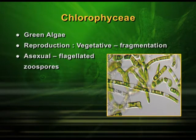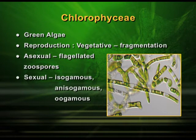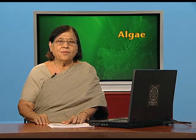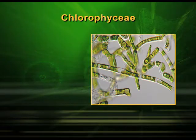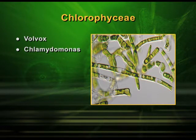Asexual reproduction is possible by production of zoospores, which are flagellated — meaning they are motile. So we can say that asexual reproduction is by motile zoospores, and sexual reproduction in some species is isogamous, in some species anisogamous, and in other species oogamous. Good examples of class Chlorophyceae are Volvox, Chlamydomonas, Ulva, Spirogyra, and Ulothrix.